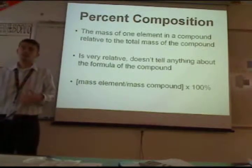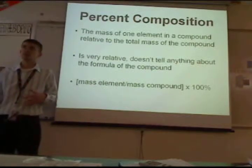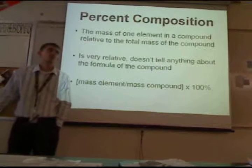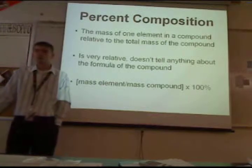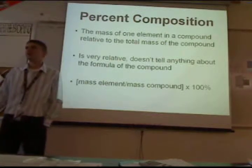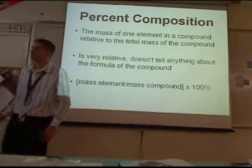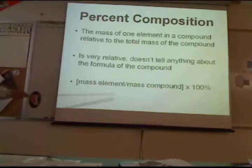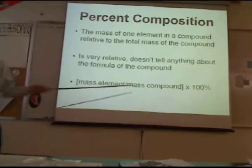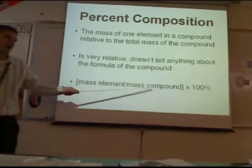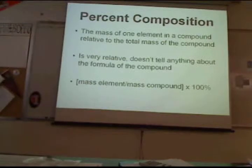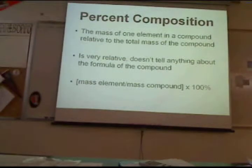It's very relative — it doesn't really tell you the number of atoms or number of moles; you've got to figure that out for yourself. But it's pretty easy to do: it's just mass of the element divided by mass of the compound times 100%. Pretty simple, as you're going to see.